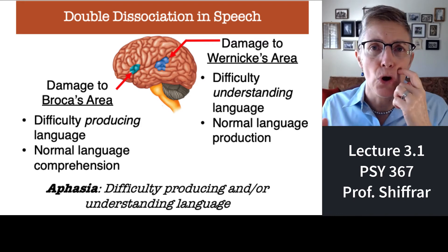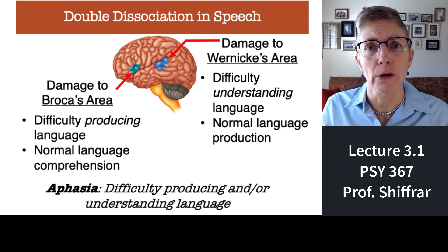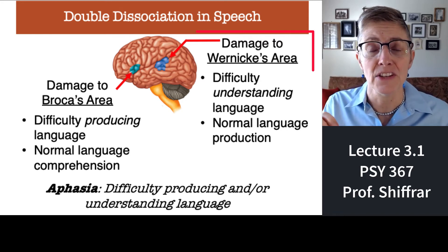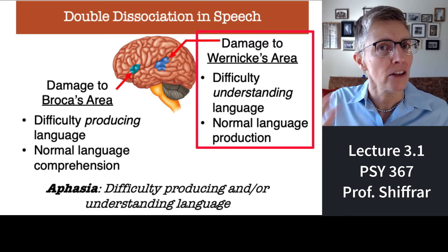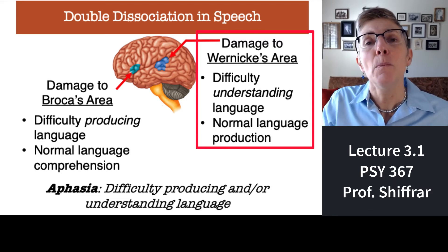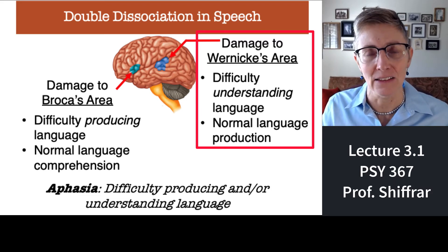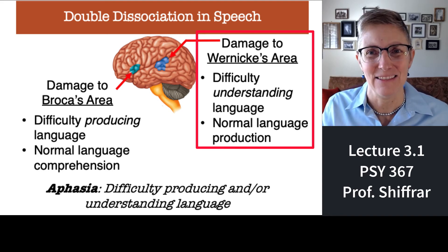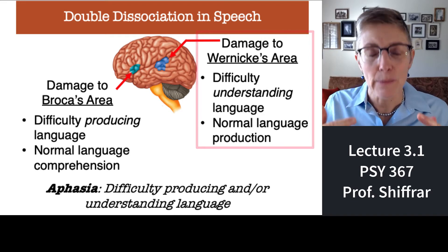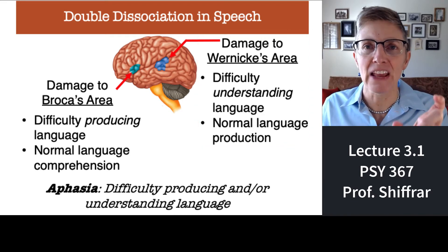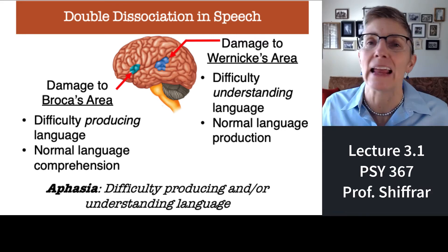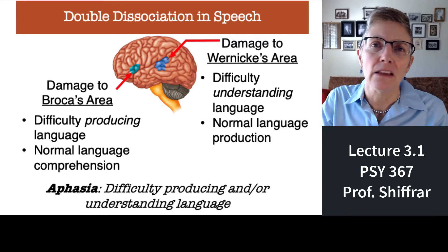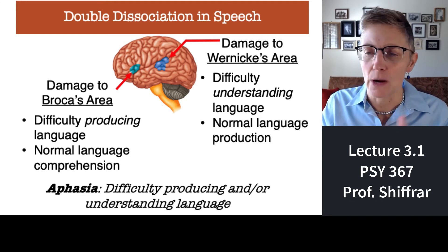If someone had damage to a different part of their brain — Wernicke's area — that individual would have no trouble producing language. They could talk and talk and sign and sign, but they would have trouble understanding language, so what they said didn't make any sense. The word aphasia, which you'll hear a lot in this class, just means having some language difficulty — it could be language production, language comprehension, or both.